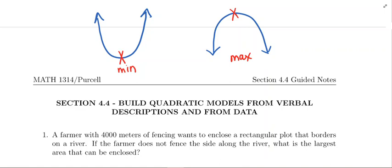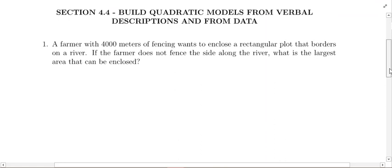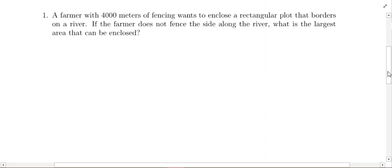There's only a handful of word problems we're going to look at. Number one is the toughest; the other word problems should not be as bad. So let's start with the hardest one and get that out of the way. Number one: a farmer with 4,000 meters of fencing wants to enclose a rectangular plot that borders on a river. If the farmer does not fence the side along the river, what is the largest area that can be enclosed?